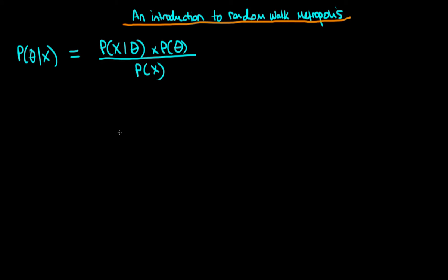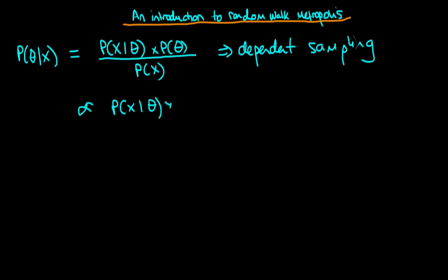In this video I want to provide an introduction to the random walk metropolis algorithm. The random walk metropolis algorithm is a way of doing dependent sampling. We use it in Bayesian statistics because it allows us, using only the numerator of Bayes' rule, to generate samples from the posterior distribution. It is perhaps the simplest and best known version of Markov chain Monte Carlo algorithms.